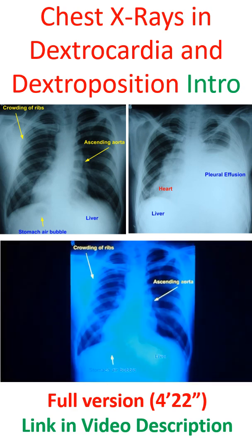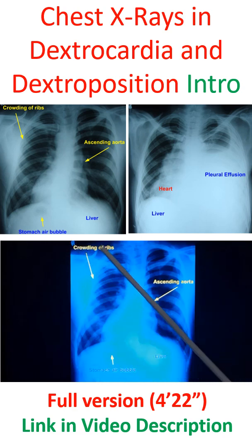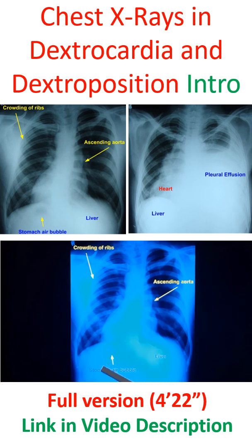This chest X-ray shows dextrocardia. It is because of the possibility of dextrocardia that when you are given a film of chest X-ray, you are supposed to look at the side identification. Sometimes you may be given the film in the reverse direction, so if you don't look at this, you will miss dextrocardia. In this case, this is a mirror image dextrocardia.